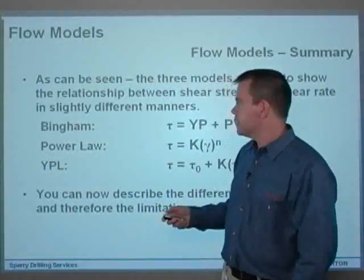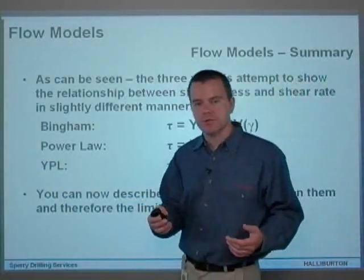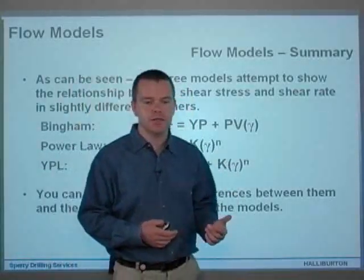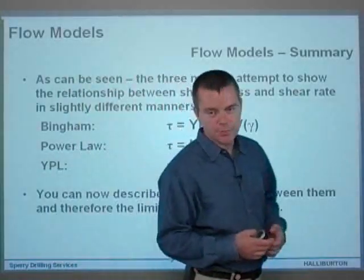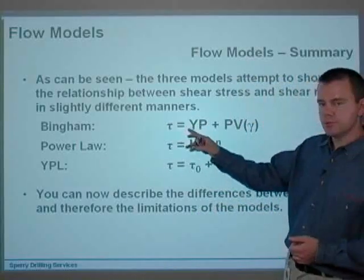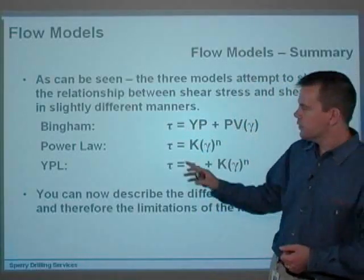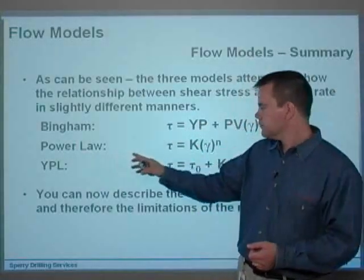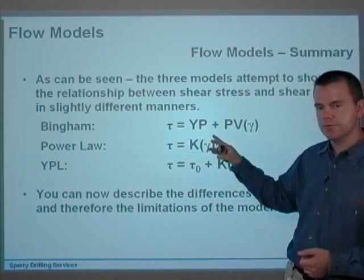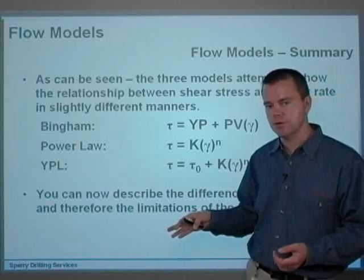Just in summary, the three models attempt to show the relationship between shear stress and shear rate in slightly different manners. Bingham gives you: Tau equals YP plus PV times Gamma. Power Law gives you: Tau equals K times Gamma to the power of N — because it's to the power of N, that's why it's called the Power Law.